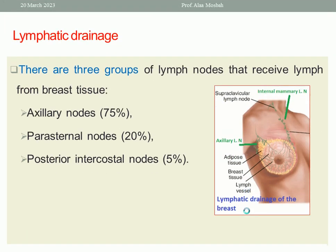What about lymphatic drainage? It is very important because lymphatic drainage plays an important role in cases of breast cancer. There are three groups of lymph nodes that receive lymph from breast tissue. First, the axillary nodes — the most important group, receiving more than 75% of lymphatic drainage, up to 90%. Second, the parasternal or internal mammary lymph nodes, constituting about 20%. Third, the posterior intercostal nodes, constituting about 5%.